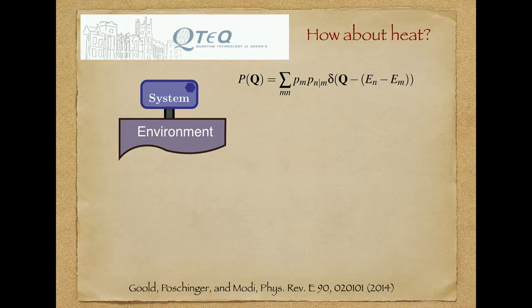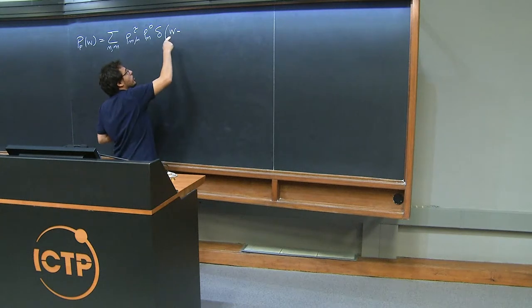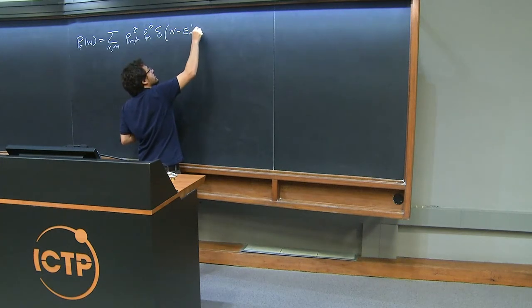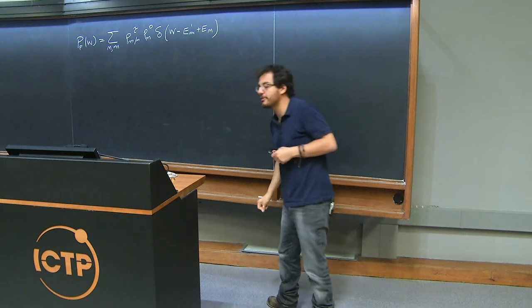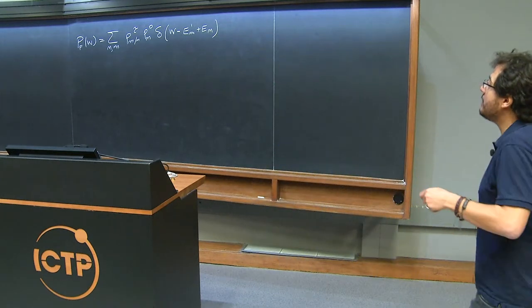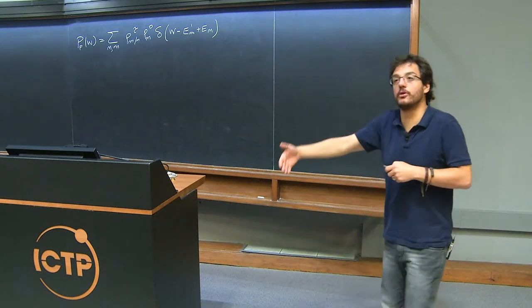The first difference is that we are going to shift our attention from the system to the environment. If you remember the expression for the work probability distribution given up until yesterday, it was something like this: transition probabilities, the initial probability to find the system in one of its eigenstates, and the work given by the difference in energy between the initial eigenvalue and the final one. These were related to the system — I performed measurements on the system.